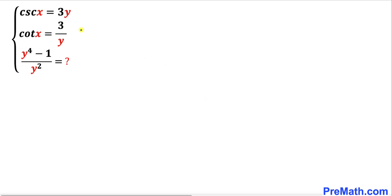Welcome to PreMath. In this video we have got the system of equations: cosecant of x equals 3y, cotangent of x equals 3 divided by y, and now we are going to find the value of y to the power 4 minus 1 divided by y squared.